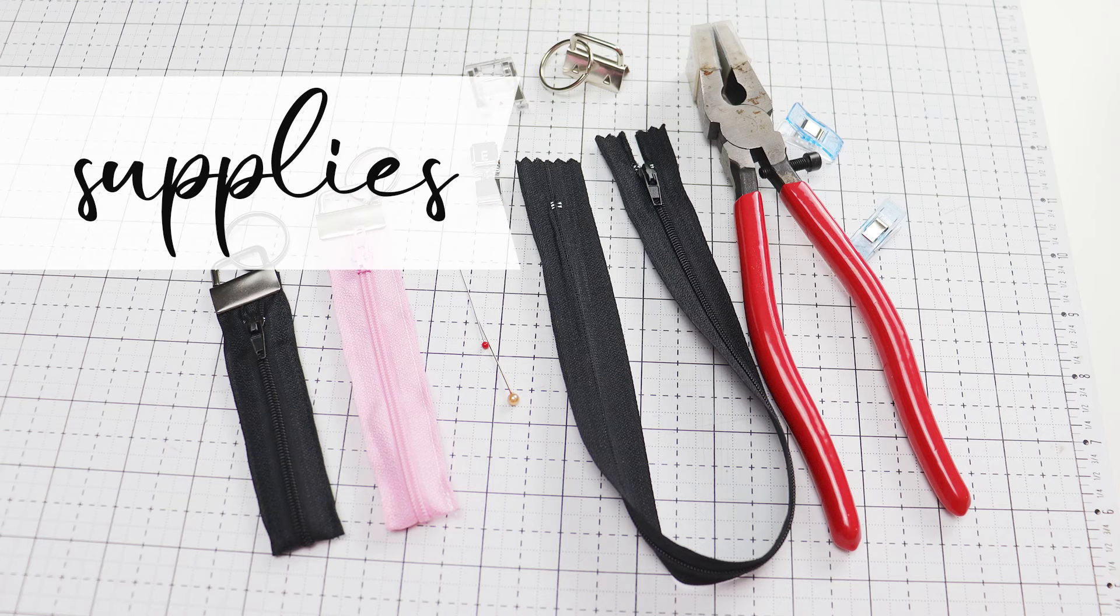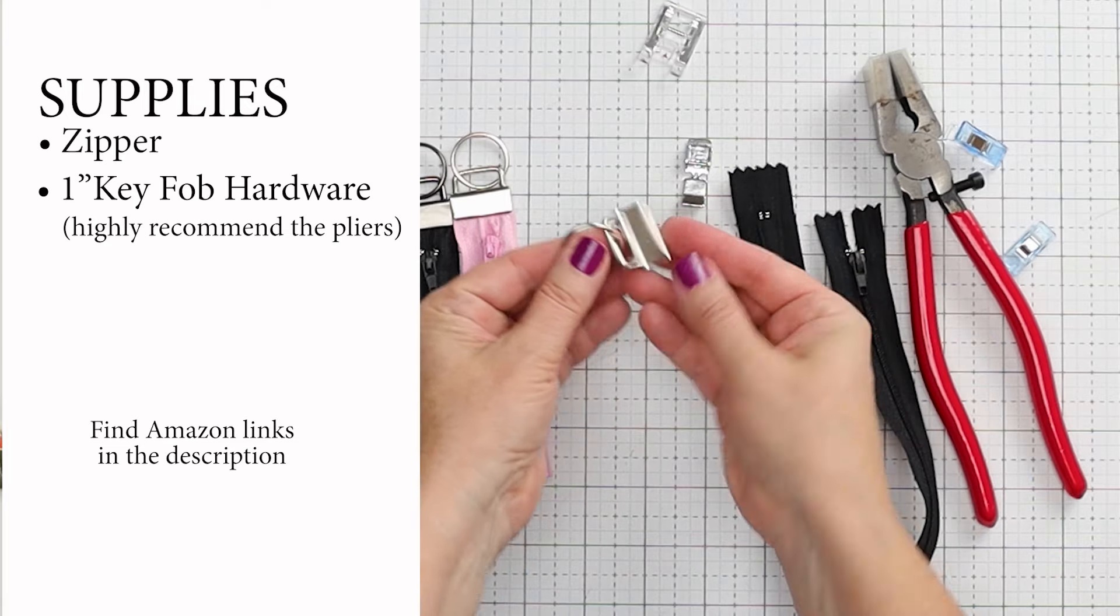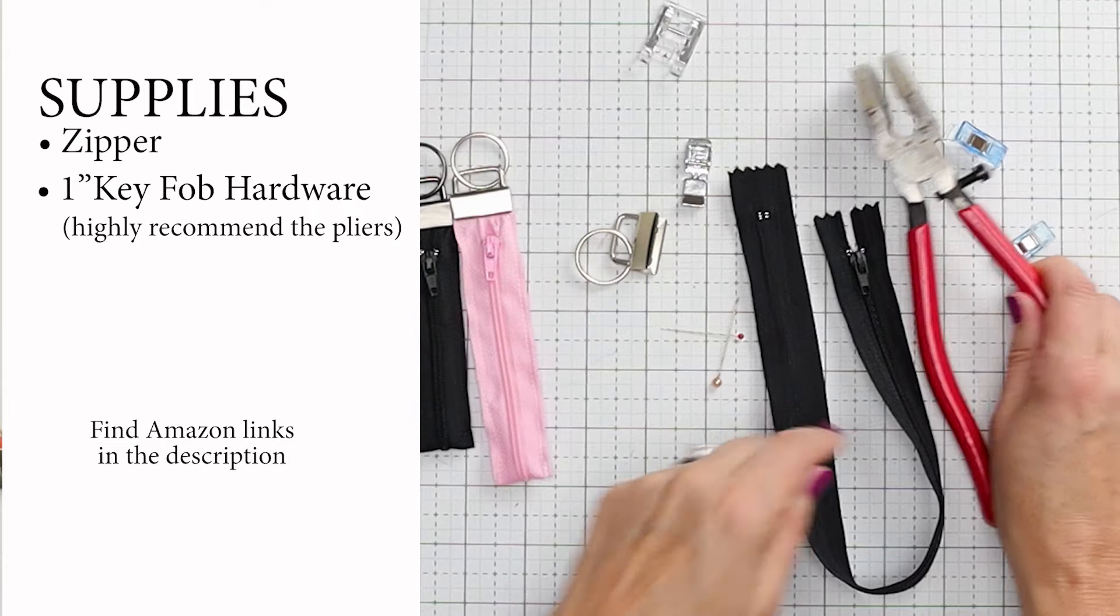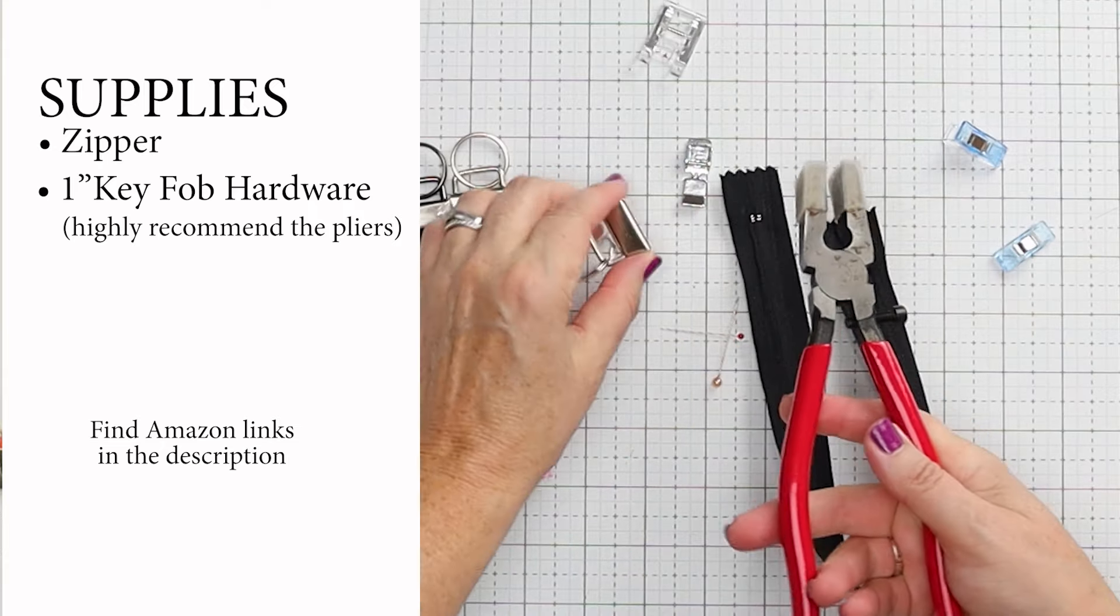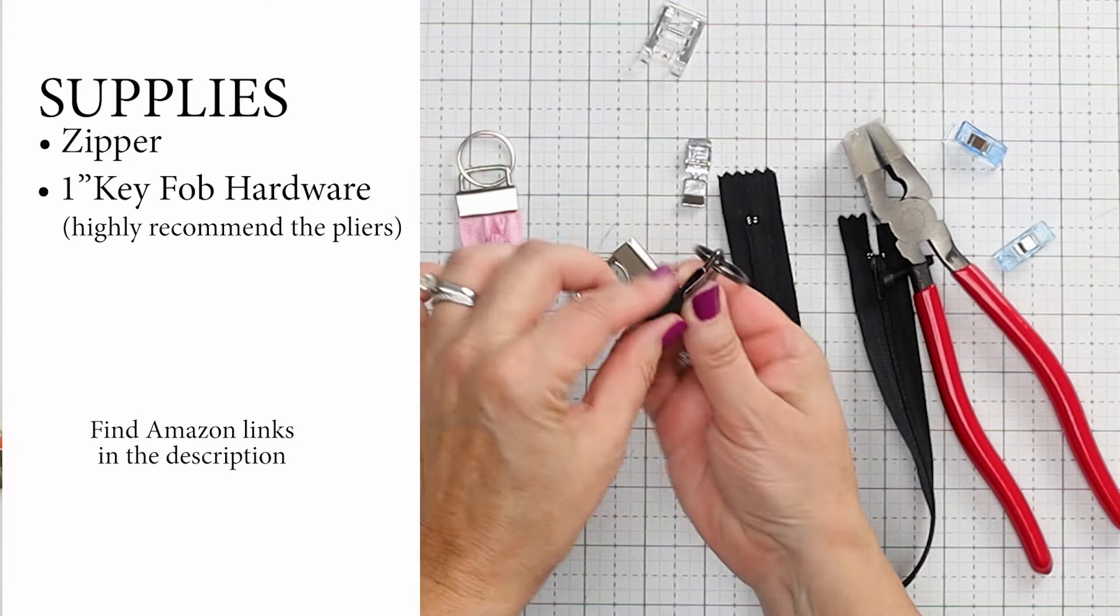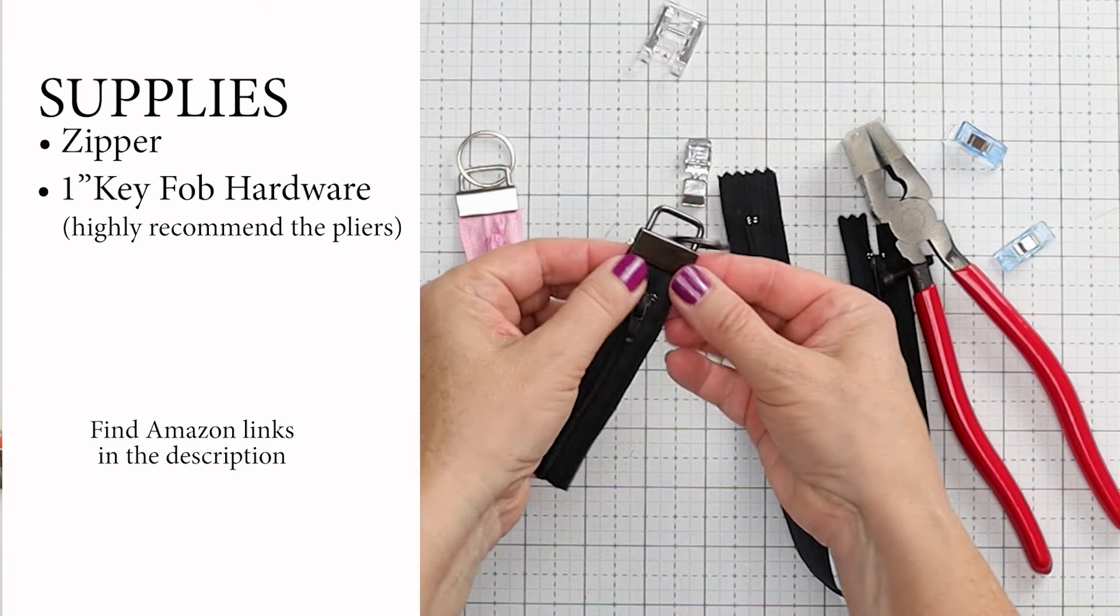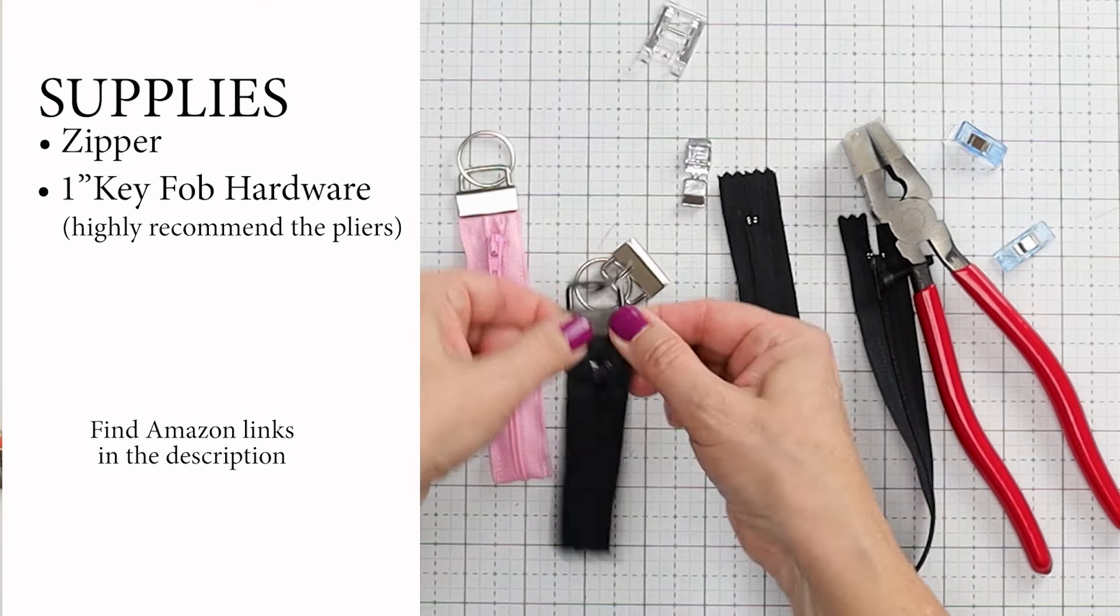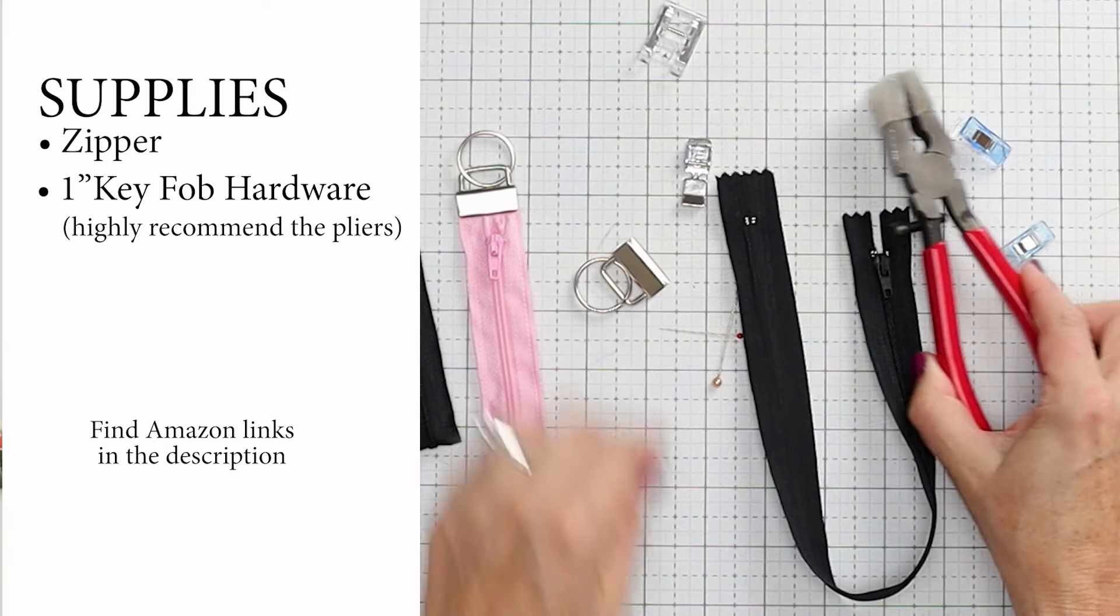So what you need: you need a zipper, you need key fob hardware. I have lots of different tutorials for things you can make with this. I use the one inch. If you are new to this, I highly recommend you get the pliers that come with it. It's going to make it so much easier to get that hardware squeezed on top of whatever kind of key fob you make. And it is going to be consistent. If you try and use regular pliers, sometimes you'll get a little bit of a dent. So this tool is very much worth the money, in my opinion.